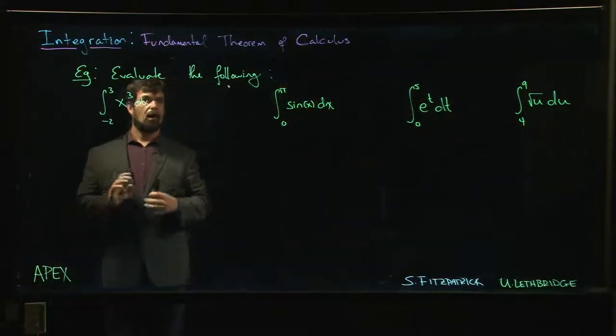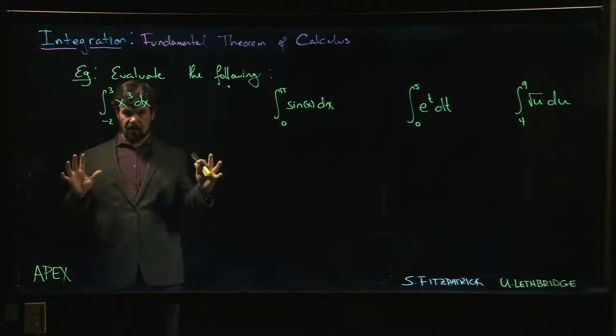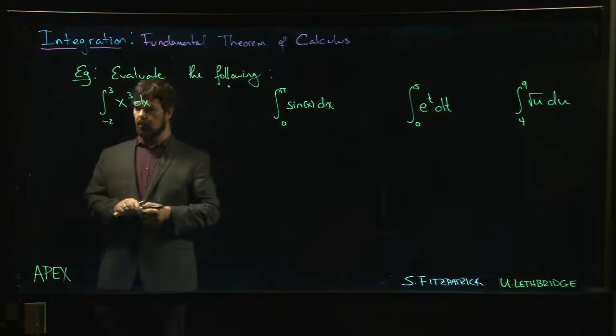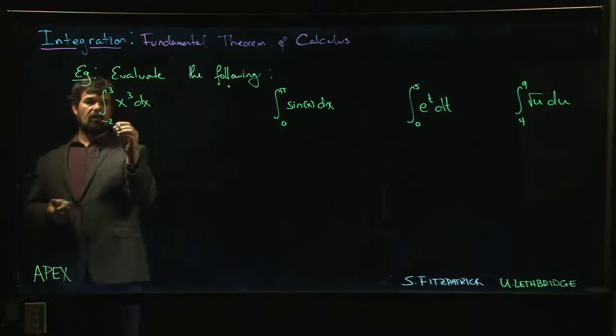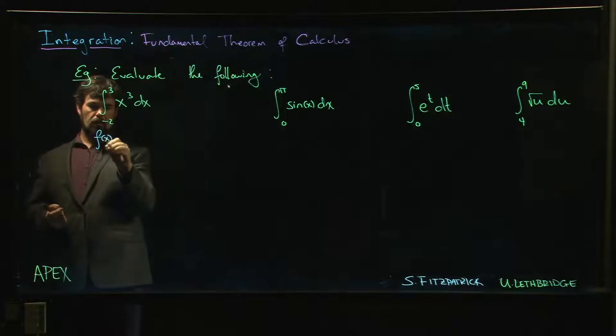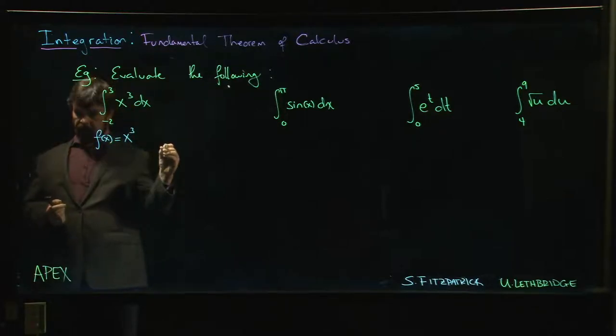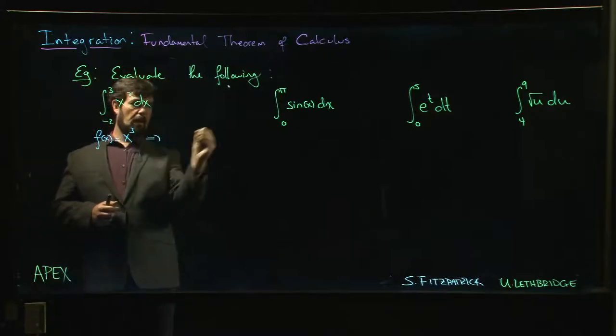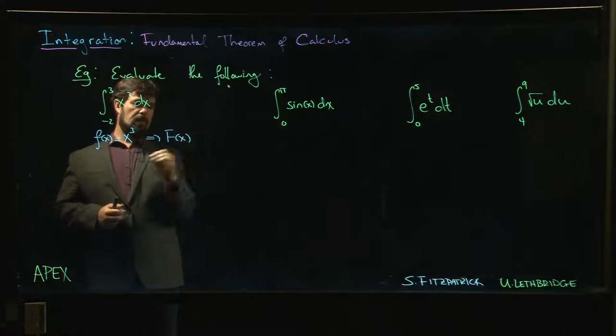Let's look at some examples to put the second part of the Fundamental Theorem of Calculus to use. In this first example, we identify the function being integrated: f(x) = x³. Next, we find an antiderivative F using the power rule, which gives us x⁴/4.